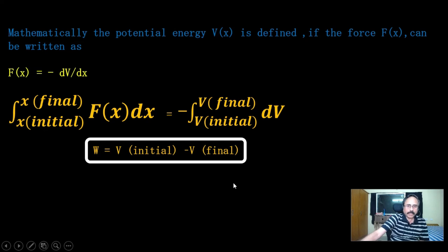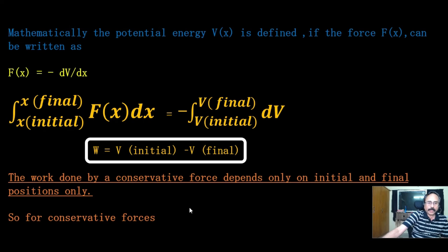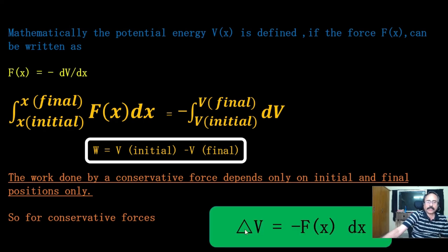Writing V_final − V_initial introduces a negative sign, so for any conservative force, delta V = −F(x) · delta x. Remember, we are going to use this equation while proving the law of conservation of energy — it is very important. The change in potential energy, delta V, equals minus the work done. This is applicable for all conservative forces.